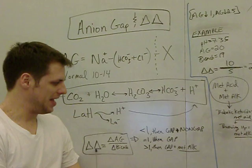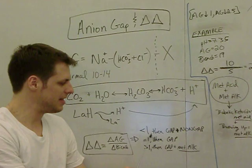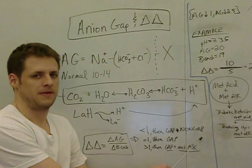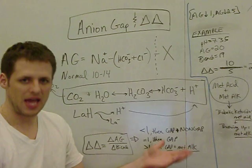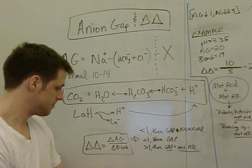When you calculate the delta-delta, if it's less than 1, that means that there is a gap and a non-gap acidosis. So a gap acidosis refers to the fact that there's a bigger anion gap, and that's the cause for the acidosis. A non-gap acidosis simply means your anion gap is 10. It's what it's supposed to be, but you still have an acidosis.